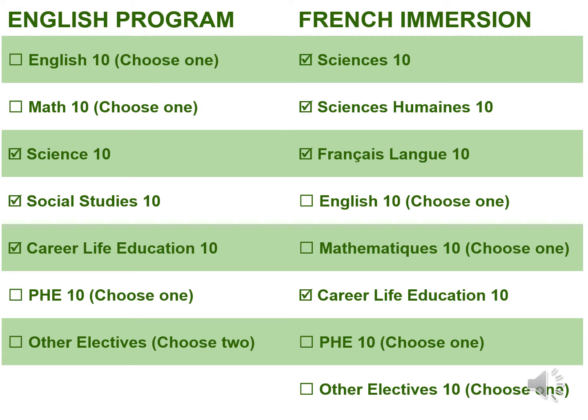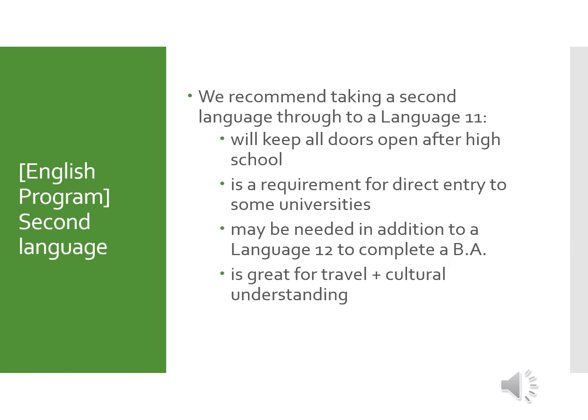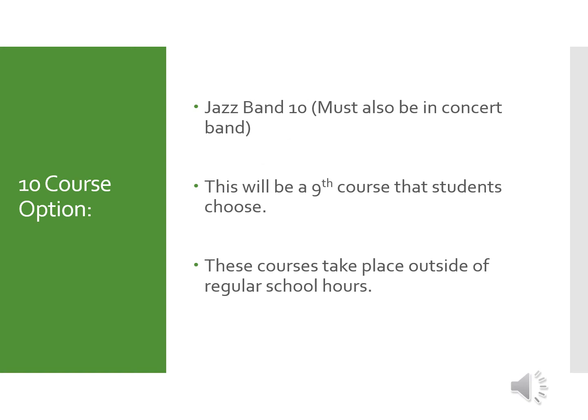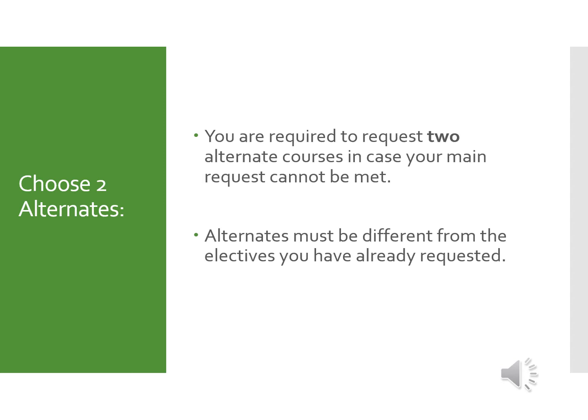English program students may choose two electives; French immersion students choose one additional elective. Note that in the English program, a language course is not required at grade 10 — it is an elective — however, we recommend taking a language through to grade 11, as many universities require a language to at least that level for entry. Requirements vary by university across Canada, but it is recommended. There's also the additional course option of jazz band: if you're in concert band and would like a course outside of school hours, you can request jazz band on your course selection sheet.